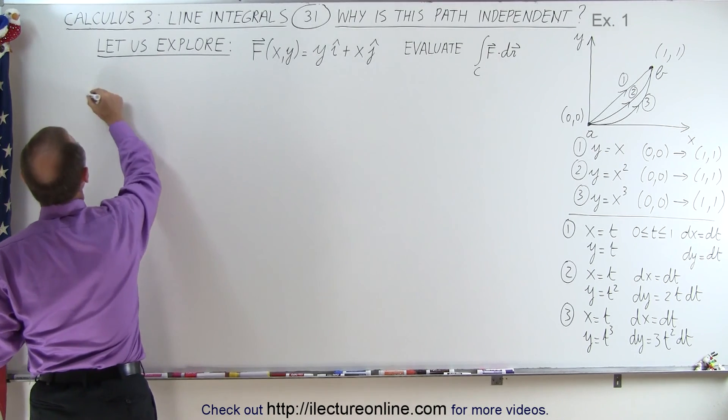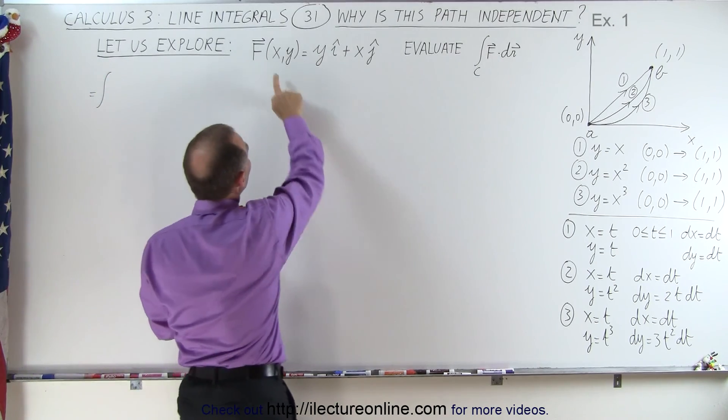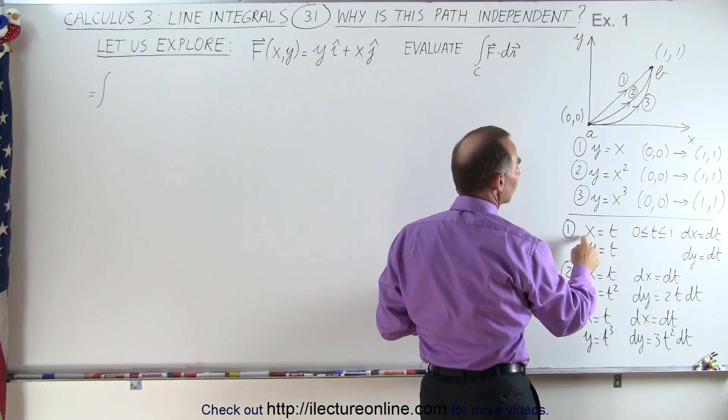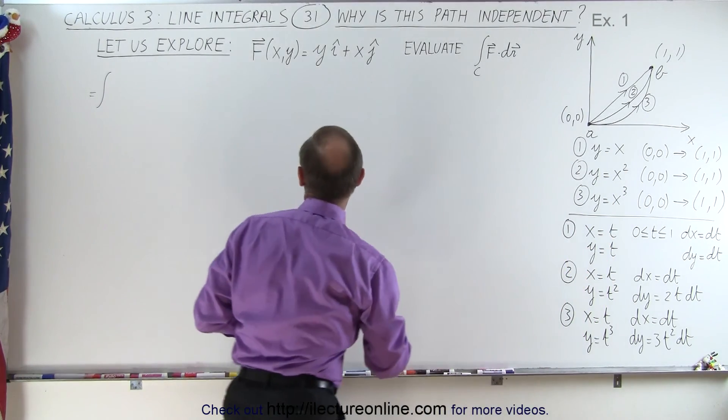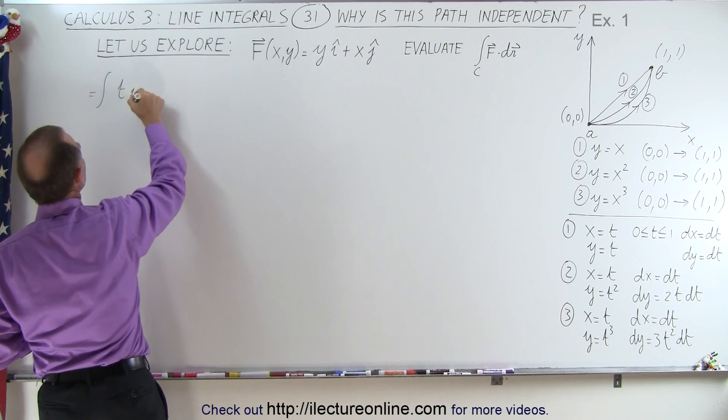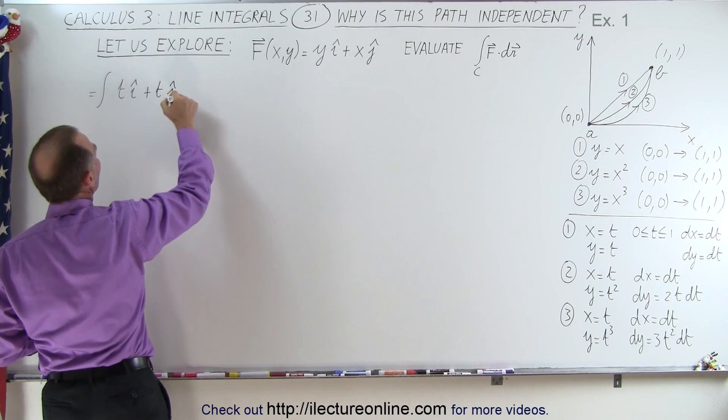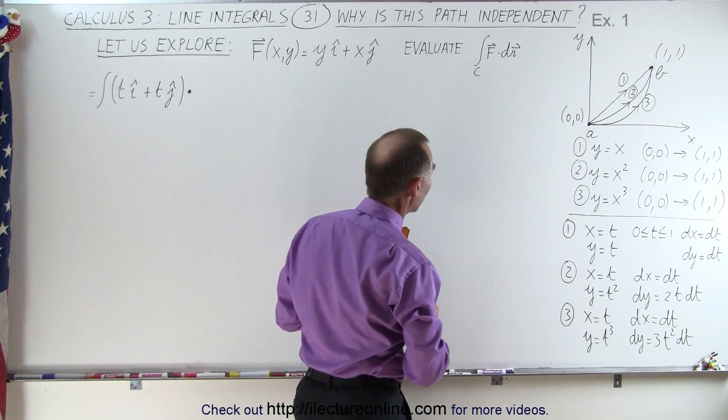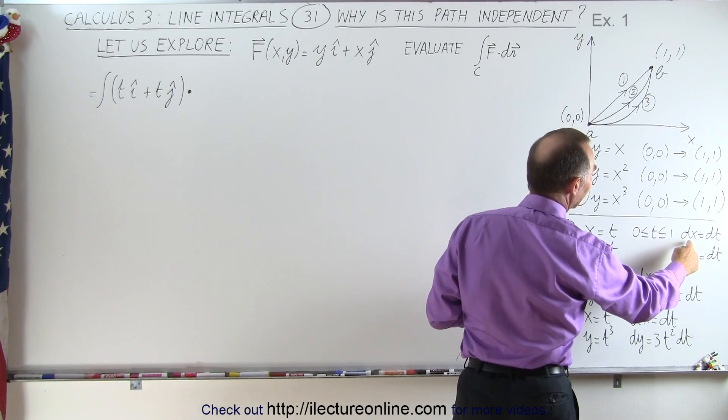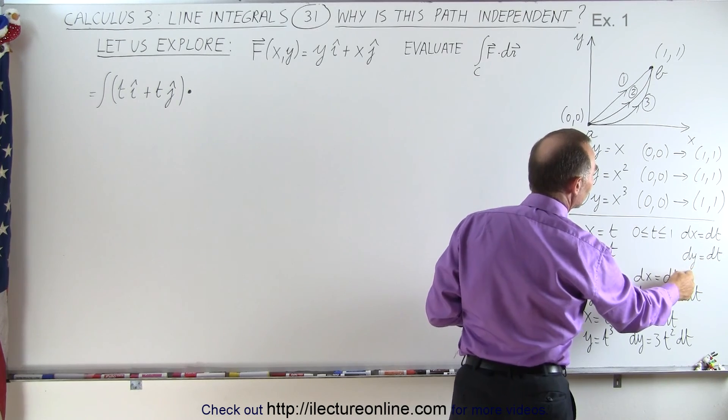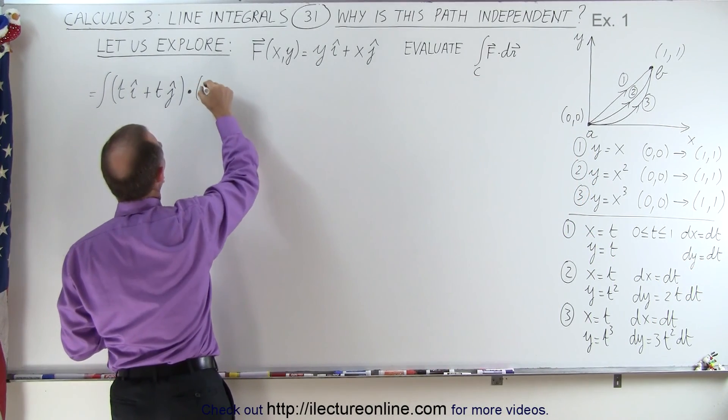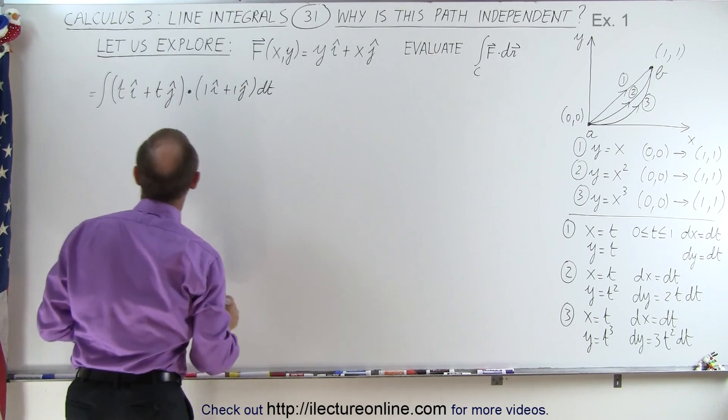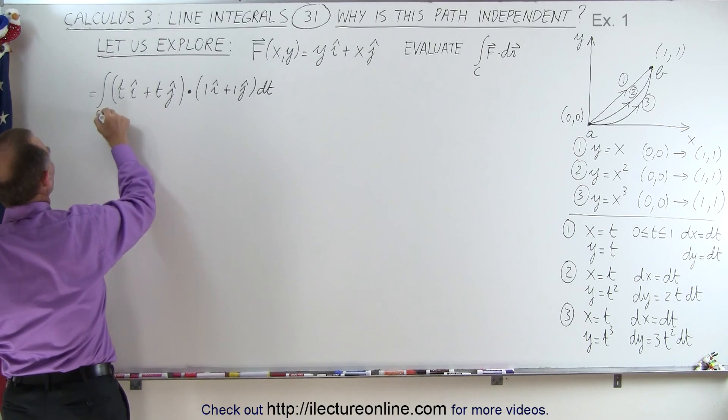So in the first case, this is going to be equal to the integral of the vector field. Now in the first case, y equals x, so when we use the parametric equations x equals t and y equals t, f can now be written as t in the i direction plus t in the j direction. And we're going to do the multiplication via dot product of dr. Now dr can be defined as dx in the i direction plus dy in the j direction. So this becomes equal to 1 in the i direction plus 1 in the j direction times dt. And that's going to go from t equals 0 to t equals 1.